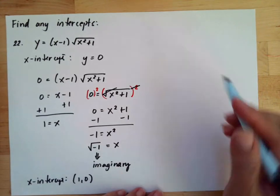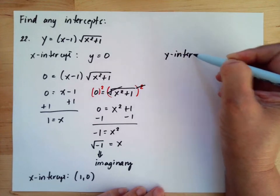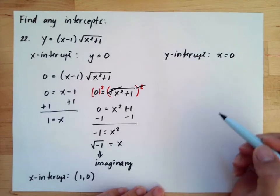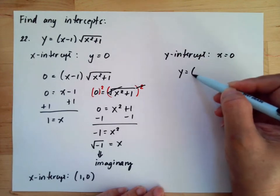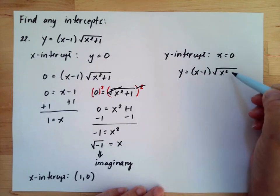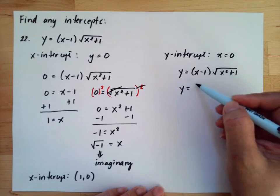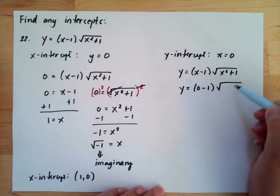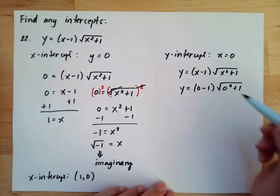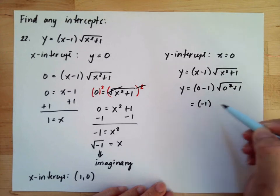Then for the y-intercept, we substitute x equal to 0. So we have y equals (x minus 1) times the square root of x squared plus 1. Substituting 0 for all x values: 0 minus 1, square root of 0 squared plus 1. Since 0 squared is 0, this becomes negative 1 times the square root of 1.